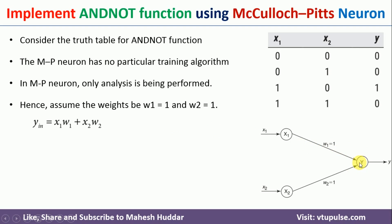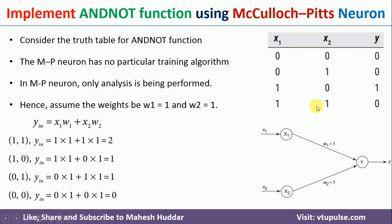First we need to find out the net input to y, based on the value of theta, the threshold value. For input (1,1) with weights both 1: x1·w1 + x2·w2 = 1×1 + 1×1 = 2. For input (1,0): 1×1 + 0×1 = 1. For input (0,1): 0×1 + 1×1 = 1. Finally, for input (0,0): 0×1 + 0×1 = 0. These are the net inputs calculated for this neuron.